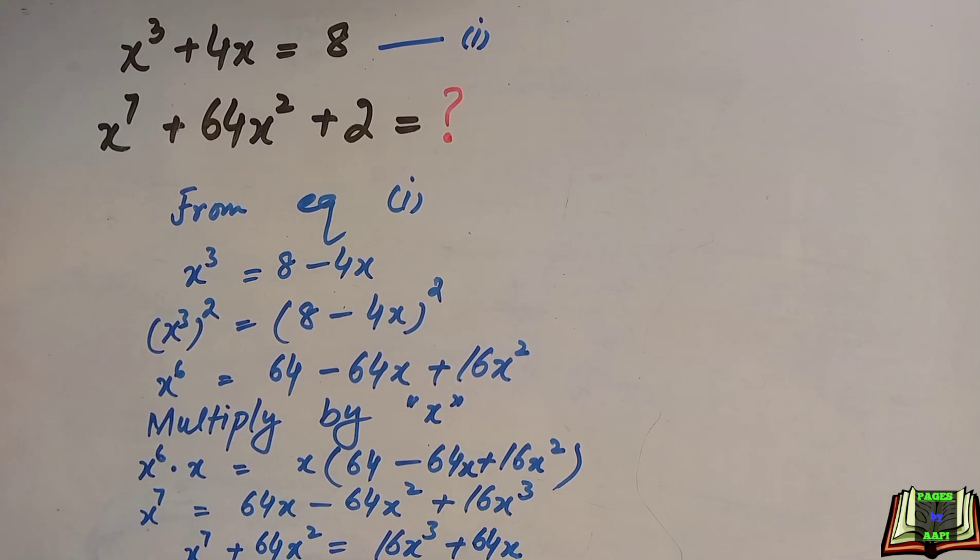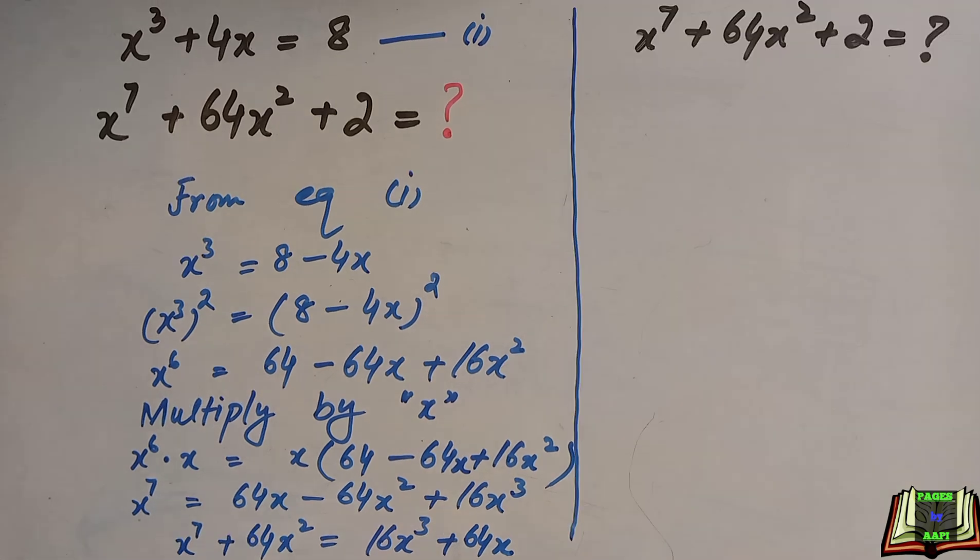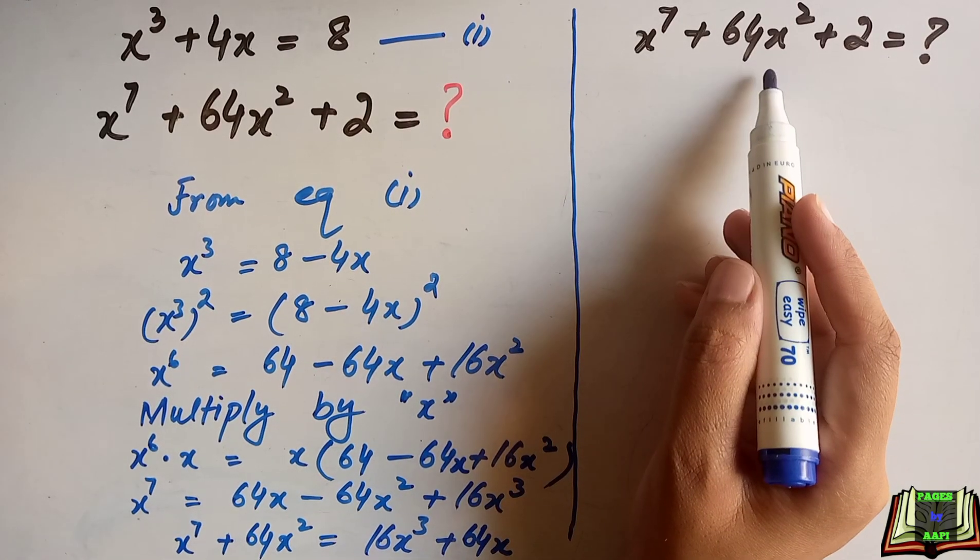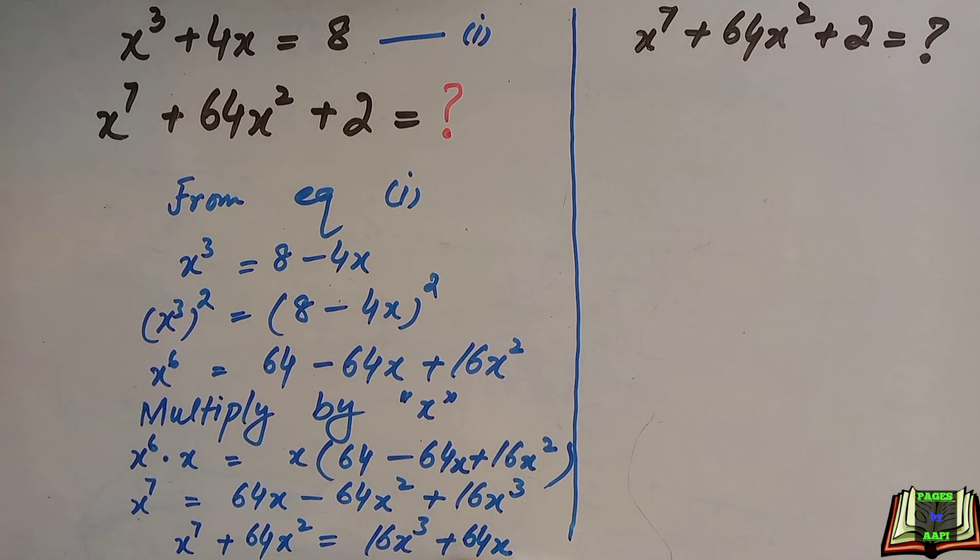Now observe why we did all this manipulation. In this equation, we're going to substitute to find the value of x⁷ + 64x² + 2.